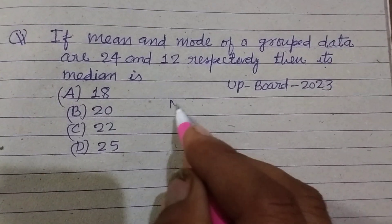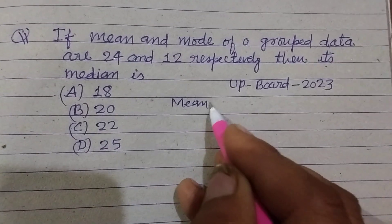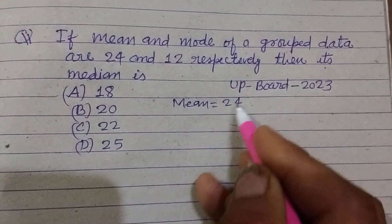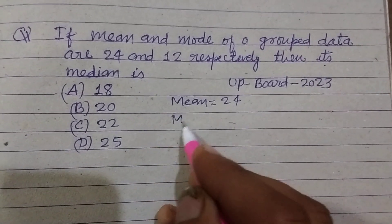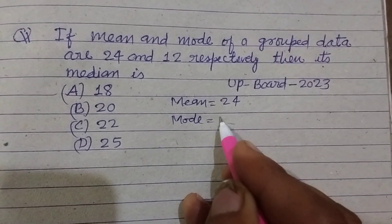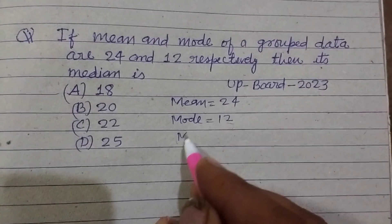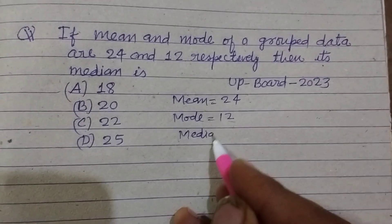Here, mean is given to us as 24 and mode is given to us as 12. We want to find out the median.